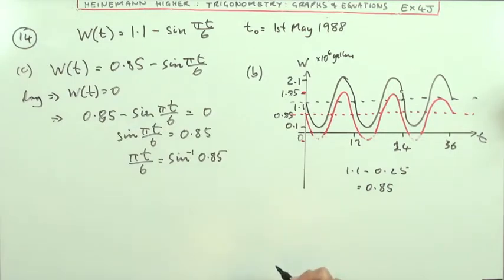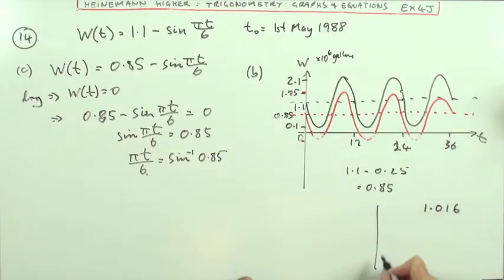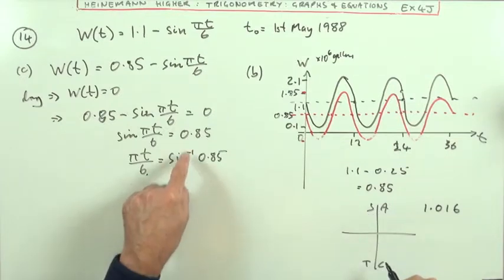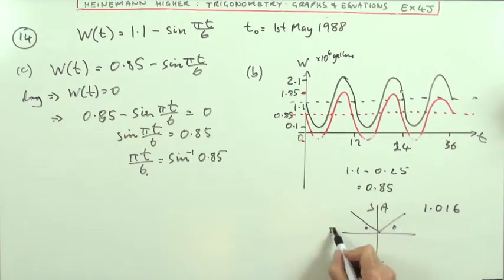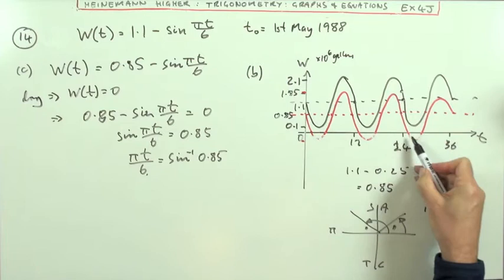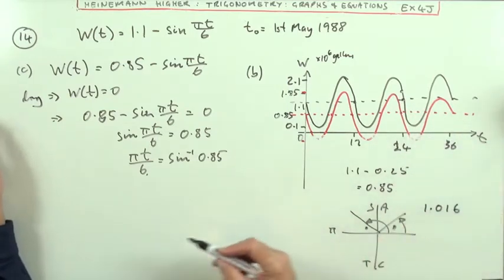So I need to find that part. Well, it comes out as 1.016 radians. Right, put that into the all sine tan cos diagram. It has positive sine, so it's either 1.016 there or 1.016 there. It's in radians. So there's two times when it'll run dry, of course, there and presumably whenever it starts raining again or something.